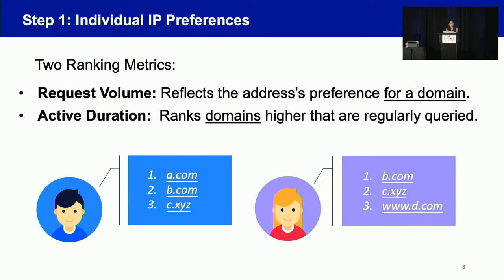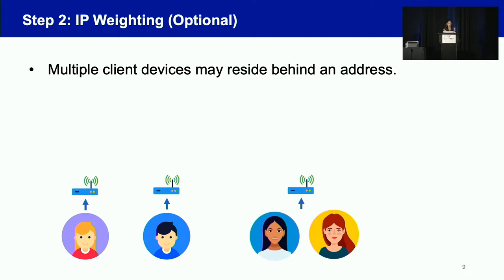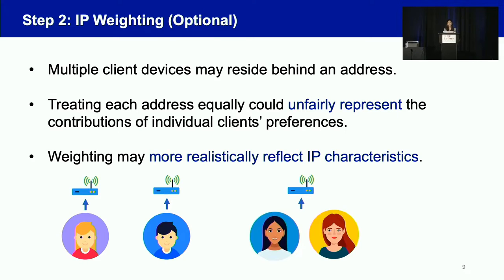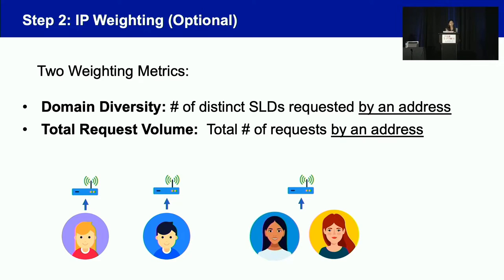You can check the details in our paper on how we aggregate these two metrics. Before aggregating individual IP preferences, consider another scenario: multiple client devices may reside behind one IP address. Could we treat all those IP addresses the same? It may unfairly represent the contribution of individual clients' preferences. So we consider IP weighting to more realistically reflect IP characteristics. We also consider two features for calculating IP weighting: domain diversity and total request volume, as both metrics positively correlate with the client population behind the IP address. We combine these two metrics to calculate weighting for each IP address.